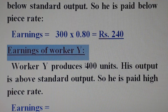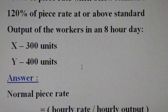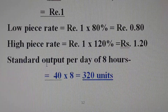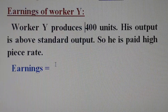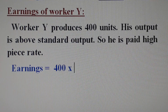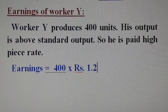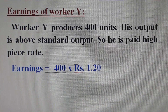Worker Y is efficient and produces 400 units in an 8-hour day. Since 400 units is above the standard output of 320 units, worker Y is paid at the high piece rate of Rs. 1.20 per unit. The earnings of Y are calculated as 400 multiplied by Rs. 1.20, which equals Rs. 480.